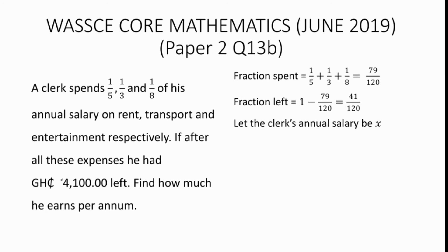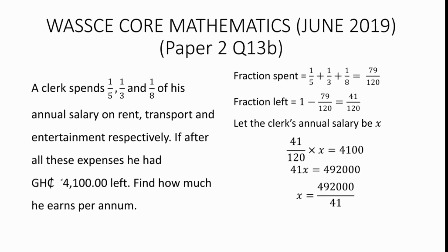We let the clerk's annual salary be X. So the fraction left, which is 41 over 120, multiplied by X equals the amount left, which is 4,100 Ghana cedis. Simplifying, 41X equals 492,000. Dividing both sides by 41 gives X equals 12,000. So the clerk's annual salary is 12,000 Ghana cedis.